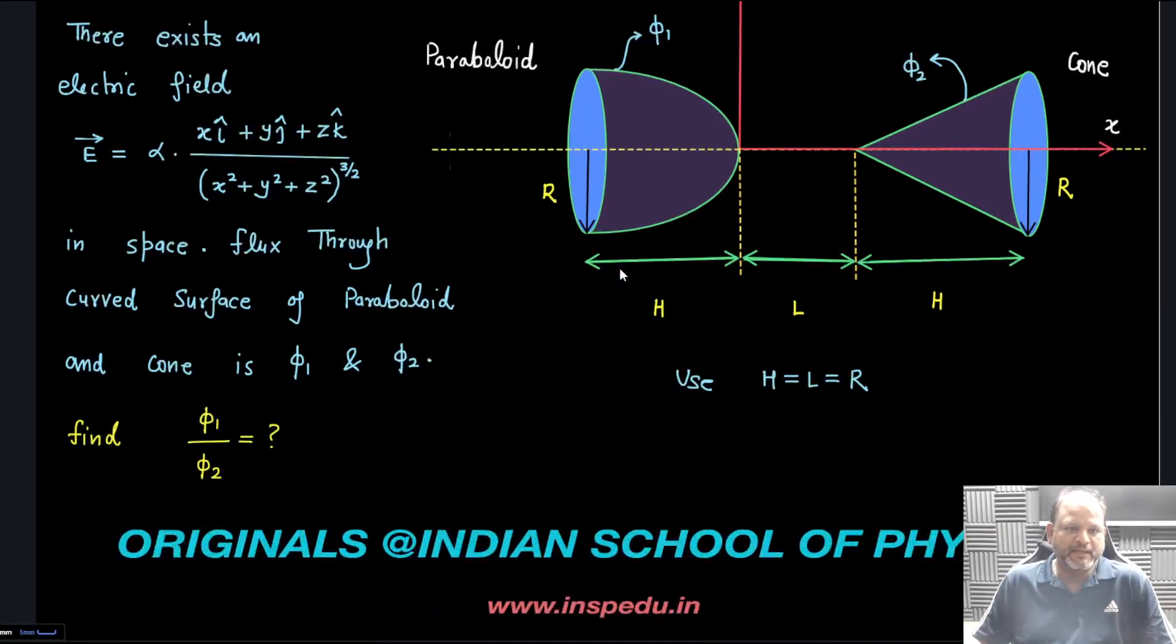Let's discuss the concept and application in the key areas where this problem was special. I'll read the problem statement: There exists an electric field with expression α times (x𝐢̂ + y𝐣̂ + z𝐤̂) divided by (x² + y² + z²)^(3/2) in space.